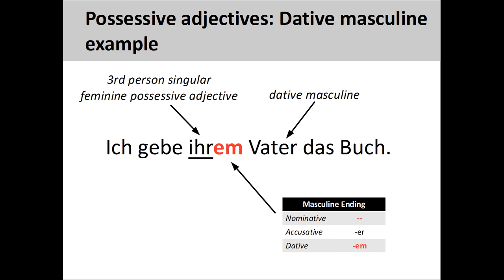Let's change the gender of the noun that is modified by the adjective. 'Ich gebe ihrem Vater das Buch' — I give the book to her father. Since the noun in the sentence is masculine and in the dative case, it must take -em as an ending. The root, however, stays the same, indicating a relationship between the father and the female person, his daughter.